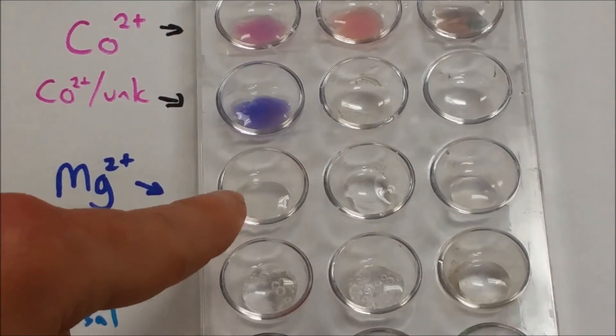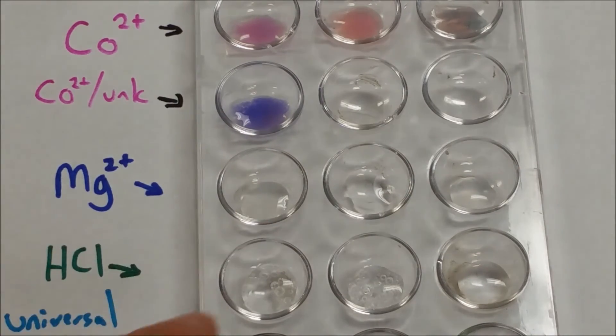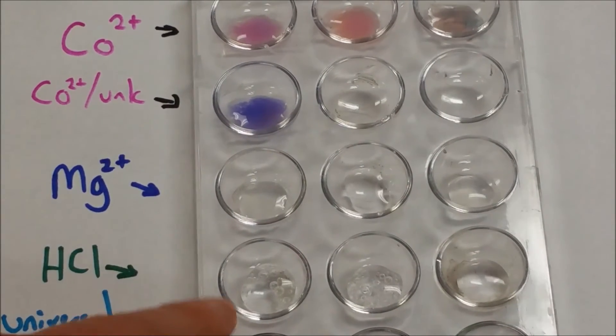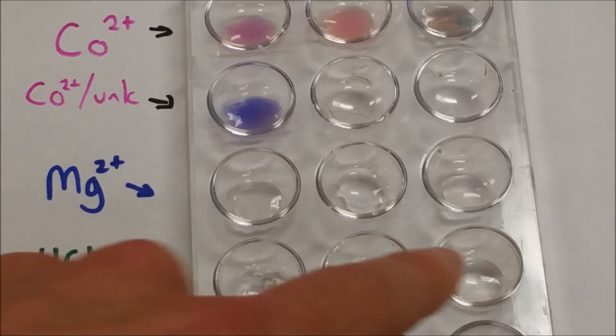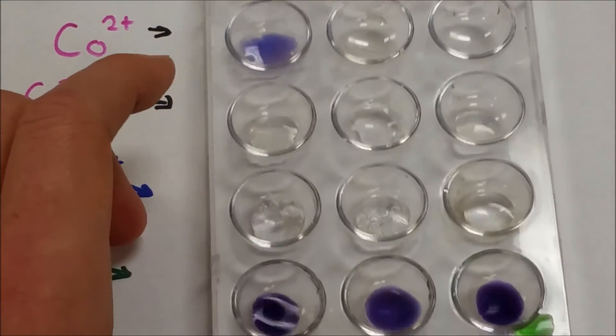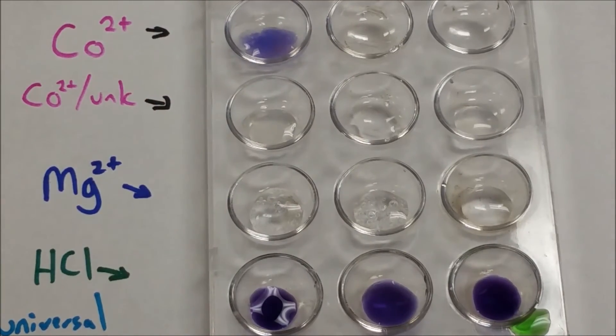Down here, you can't see the precipitates, but I'm going to move the background in a second. But here we can see bubbling, we can see bubbling and no bubbling. And then for the universal indicator, it looks like they're pretty much purple across the board.